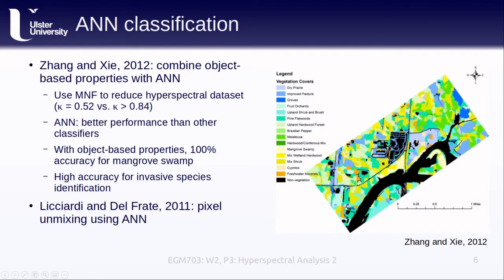A 2011 study by Licchiardi and Delfrate combined another approach that we've introduced — spectral unmixing — with artificial neural networks. As always, you can check this paper out in the module library.